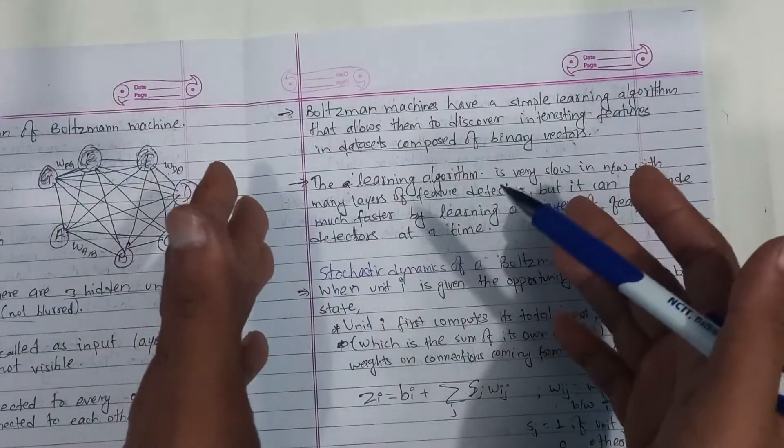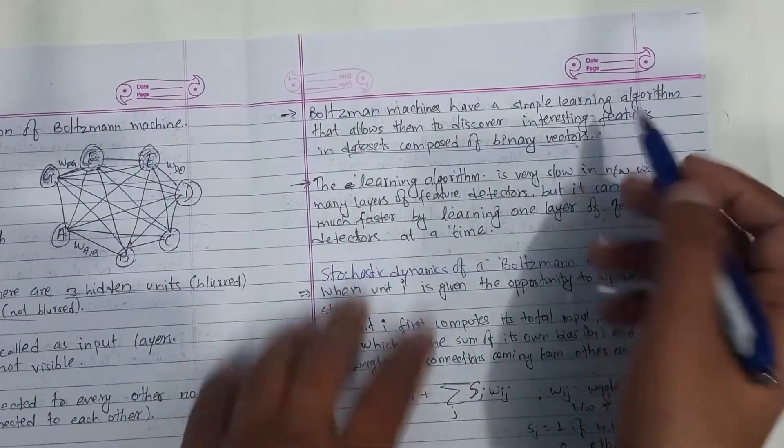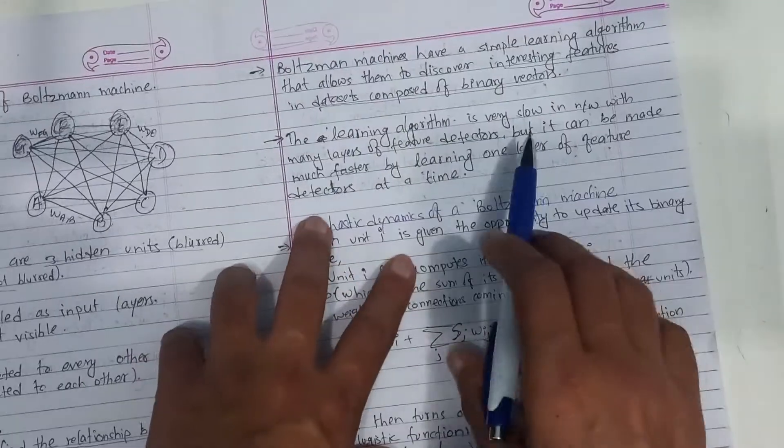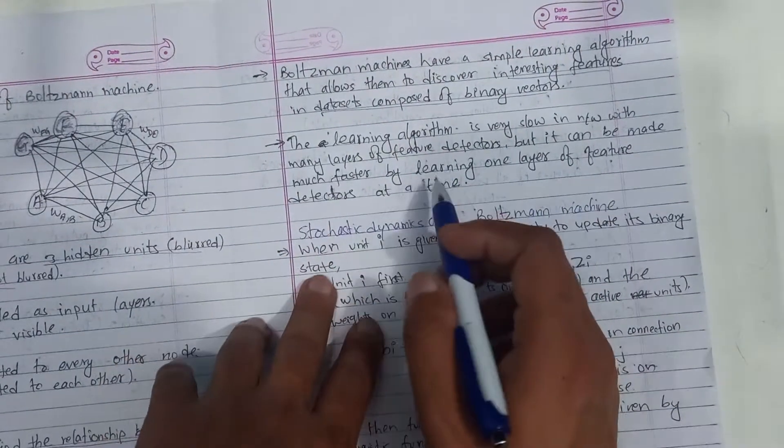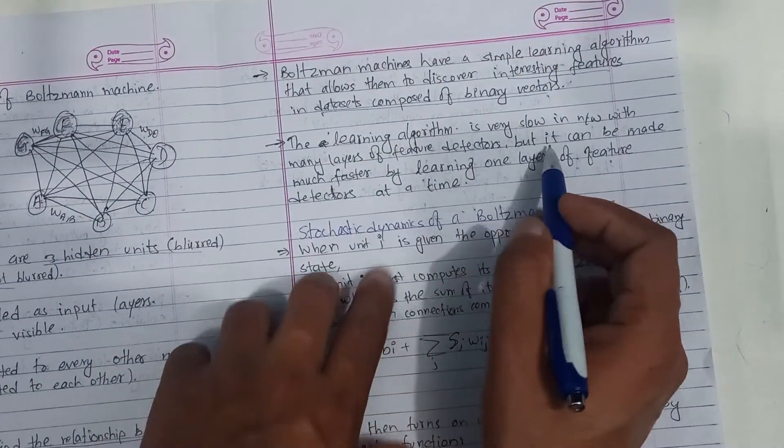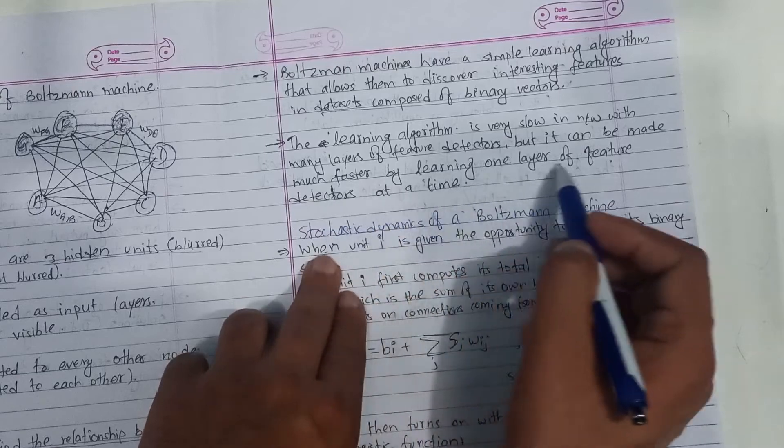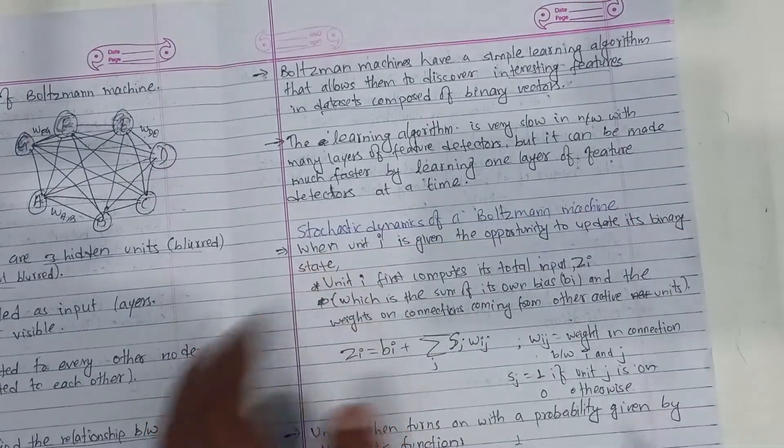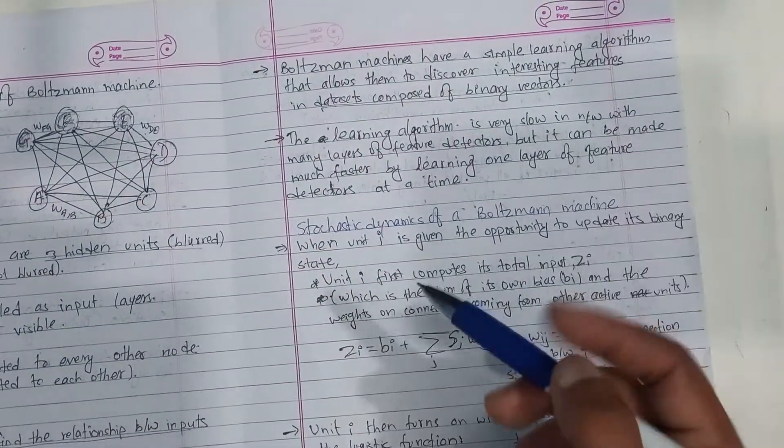So learning algorithm is very slow. Learning algorithm is very slow in nature with many layers of feature detectors, but it can be made much faster. Learning only one time, the feature detector is very efficient.